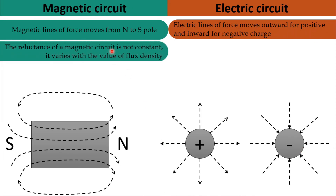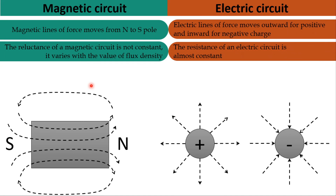The reluctance of a magnetic circuit is not constant — it varies with the value of flux density. The flux density differs at different sections of the magnetic circuit, so reluctance varies accordingly. In contrast, the resistance of an electrical circuit is almost constant, as long as temperature remains constant.